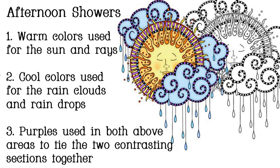Creating images that include both warm and cool colors creates something that appears to have a little push and pull — it adds an interest that you don't quite get when you use just one or the other. When you use just cool or just warm, the image will tend to be a little smoother and a little less contrasting. So using contrasting colors is a good idea if you're wanting something to pop. In this image, the sun is always going to be a warm color and the clouds and raindrops are cool, so it was easy for me to pick these colors.